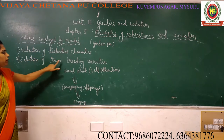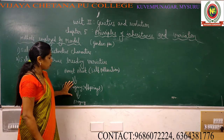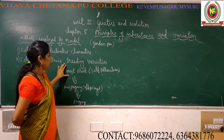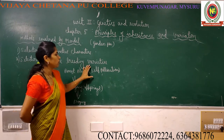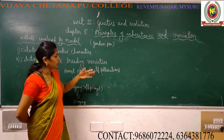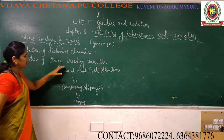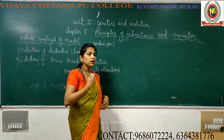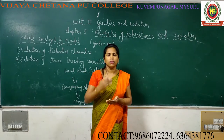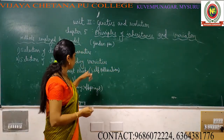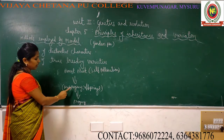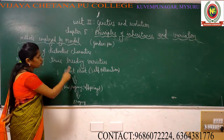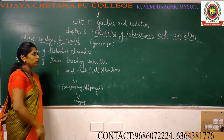Selecting true breeding varieties means selecting offspring whose characters match exactly with their parent's characters. This is possible only if the parent plants have undergone self-pollination for many years. Mendel chose these types of plants because he did not want any confusion or any mixture of combinations in his experiments.